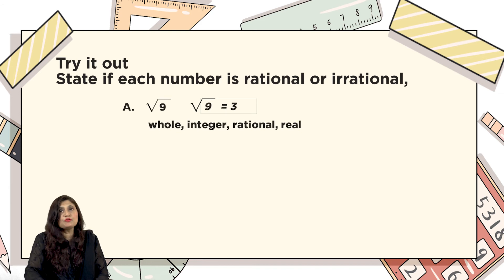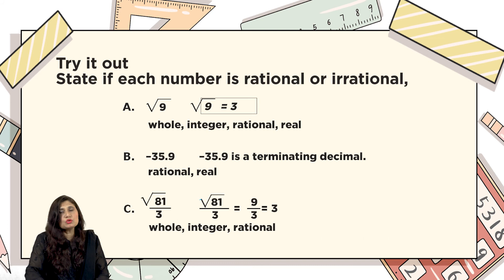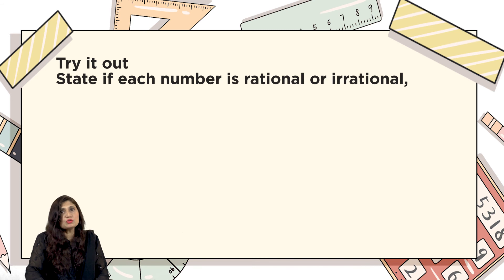Look at a few more examples. Part A: the square root of 9 — 9 is a perfect square, and its square root is 3, so it's a rational number. Part B: −35.9 is a terminating decimal, so it's a rational number. Part C: the square root of 81 is 9, and dividing by 3 gives 3, which is a whole number, so it's a rational number.